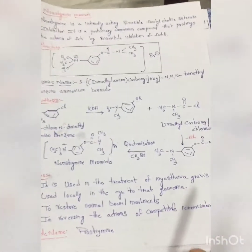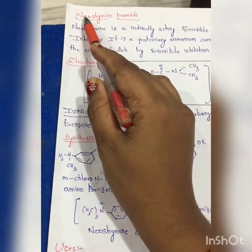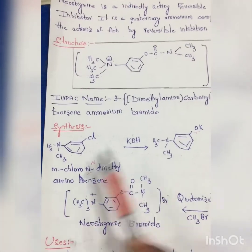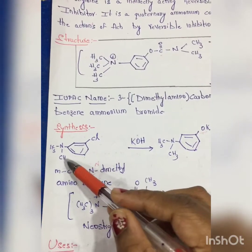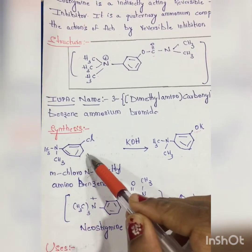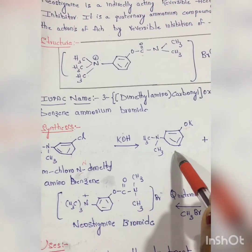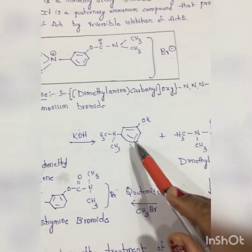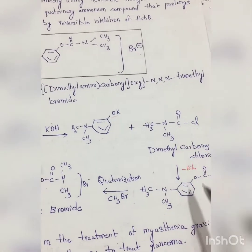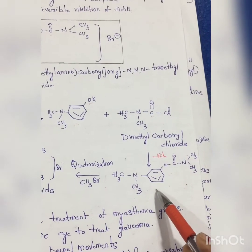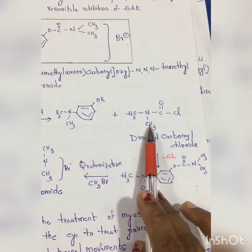This is the synthesis of Neostigmine Bromide. I repeat: meta-chloro-N,N-dimethylamino benzene when treated with a base, KOH, you will get the potassium salt. Next, this one when reacted with dimethyl carbamyl chloride, we will get this compound as an intermediate, this condensation.